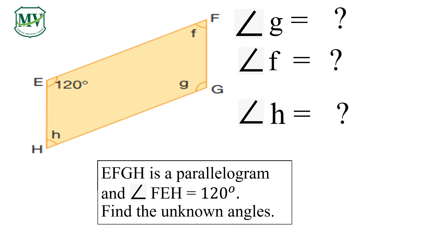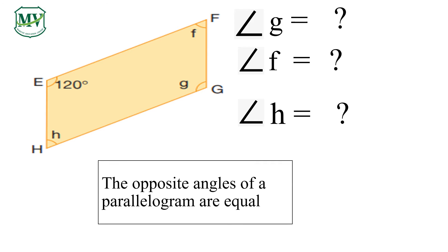Before we can solve these unknown angles, we need to recall the properties of a parallelogram. The opposite angles of a parallelogram are equal. Notice that angle FEH is opposite to angle G, so we can say that angle G is equal to 120 degrees.